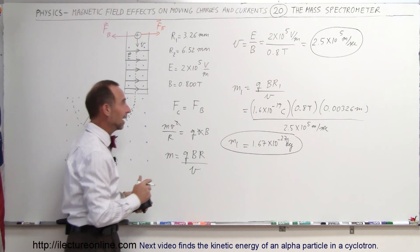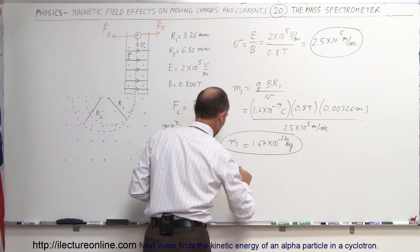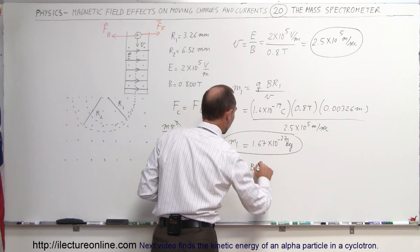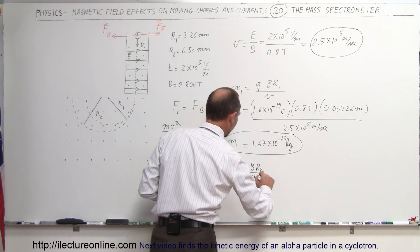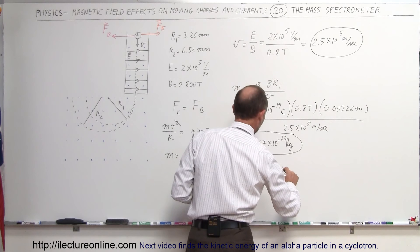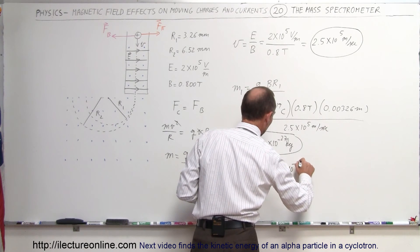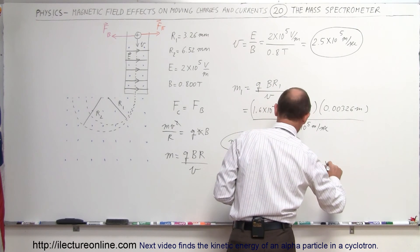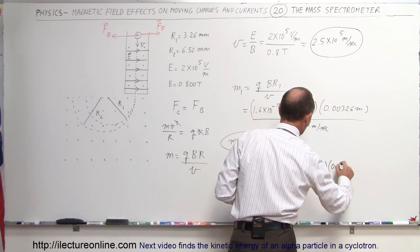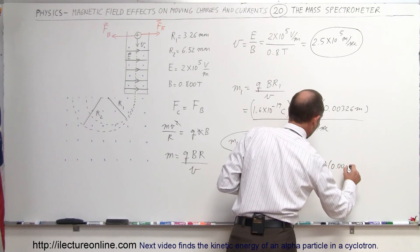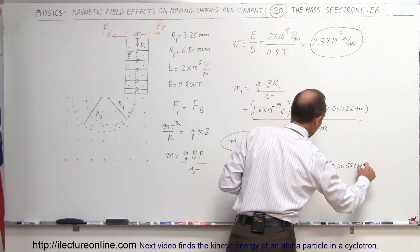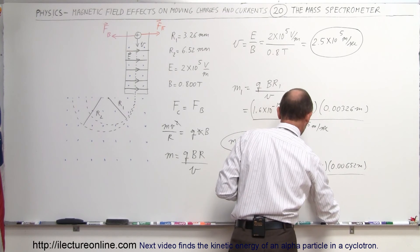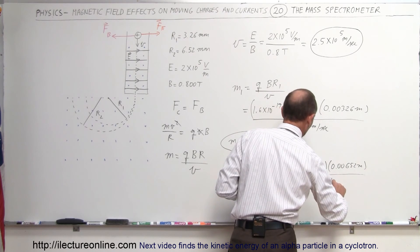All right, now let's try m2. m2 that is equal to qb r2 divided by the velocity. So in this case, 1.6 times 10 to the minus 19 coulombs times 0.8 teslas times 0.00652 meters. It's double the radius. And the whole thing divided by the same velocity of 2.5 times 10 to the fifth meters per second.